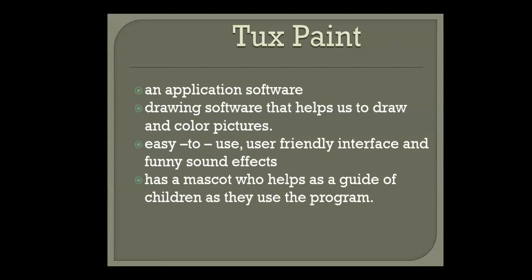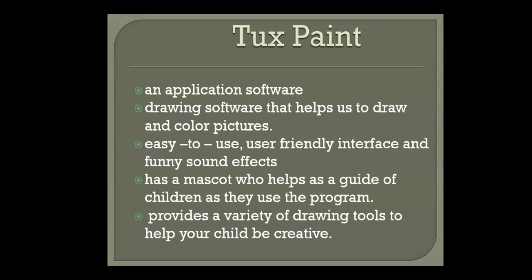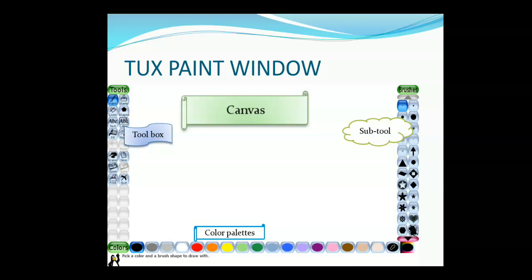When you select a tool on the left side, you will see the mascot showing the instructions and the purpose of the tool. It provides a variety of drawing tools to help your children be creative. Now we will learn about the Tuxpaint window. When you start Tuxpaint, it will look like this. The white area, the working area, is called the canvas. On the left side, you can see many options. This is called the Toolbox.